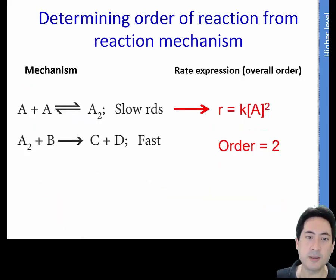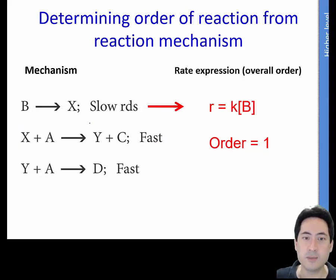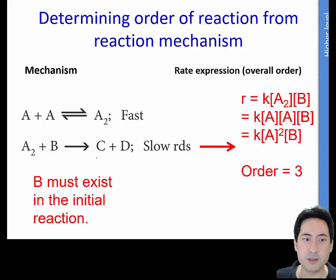The slow one, it's A plus A, so that gives us A to the power of 2. Same deal, fast, we don't worry about. That one's just B, nice and simple. And here we have the slow reactions. So it's A squared plus B. We don't have B. We can't substitute it out, and so it must be present in the initial reaction, and so we leave it in there.